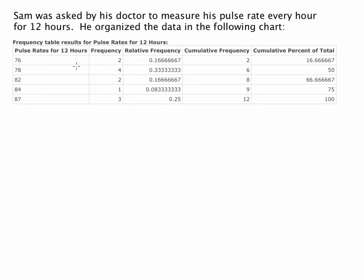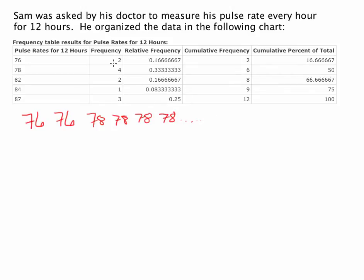The good thing about these frequency tables is that they organize the information. We can deconstruct this — if we wanted to write it back in its raw data form we could write 76 two times, that's how many times it occurred. 78 was four times, so 78, 78, 78, 78. I just wanted to illustrate that we could re-put this back into its raw data form if necessary. That's what we mean by a frequency chart or frequency table — it's telling us how many times that data value occurred.